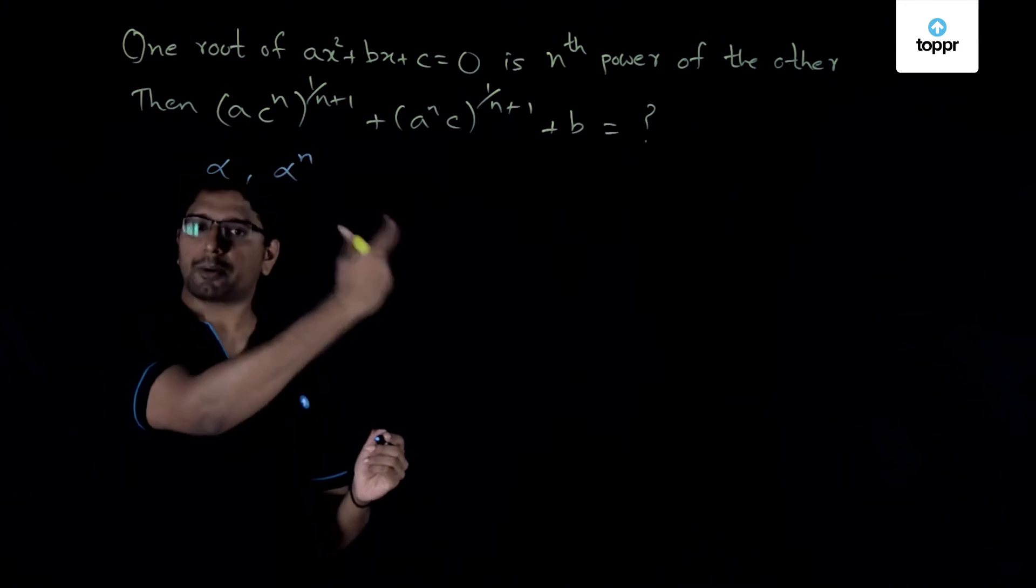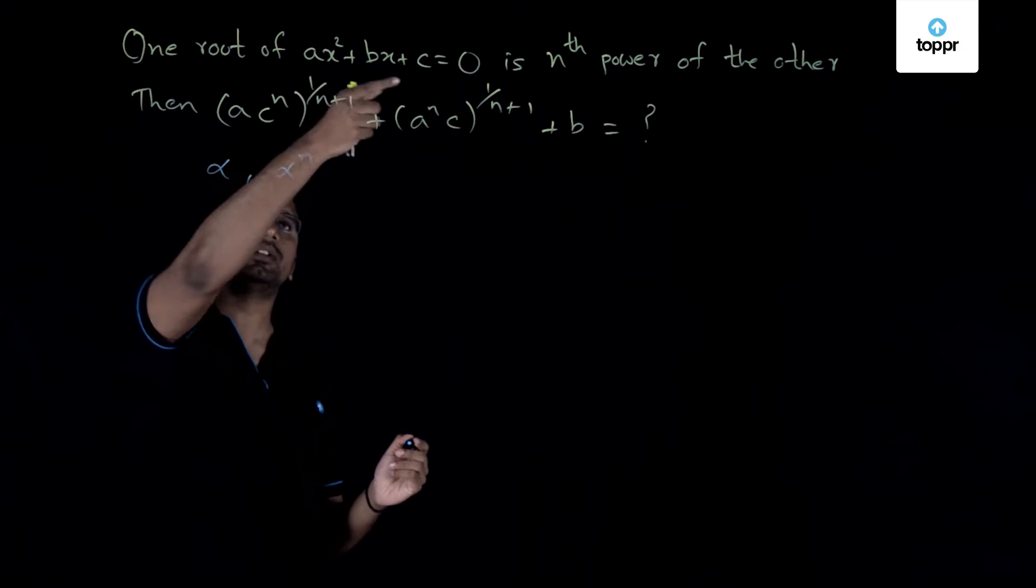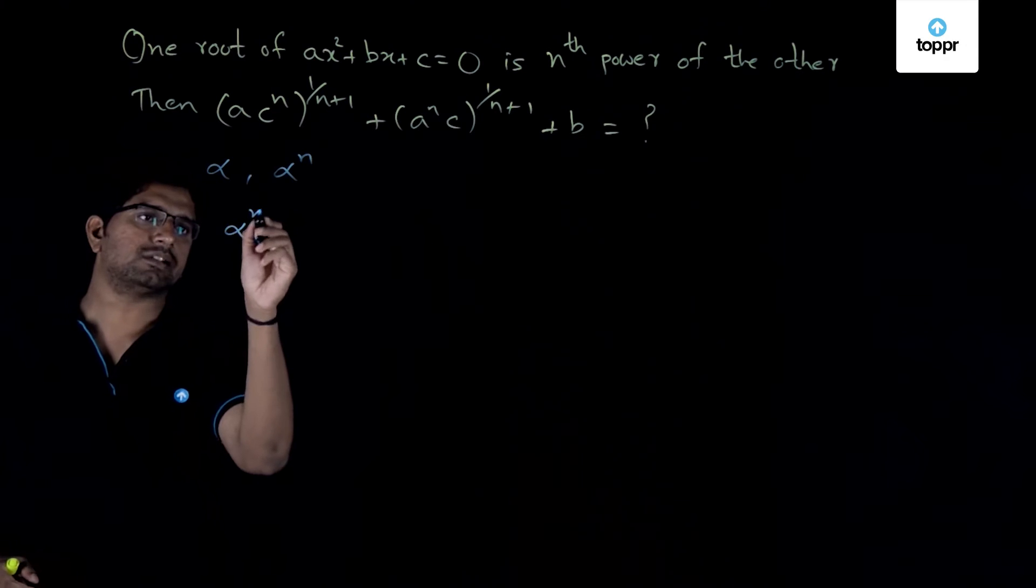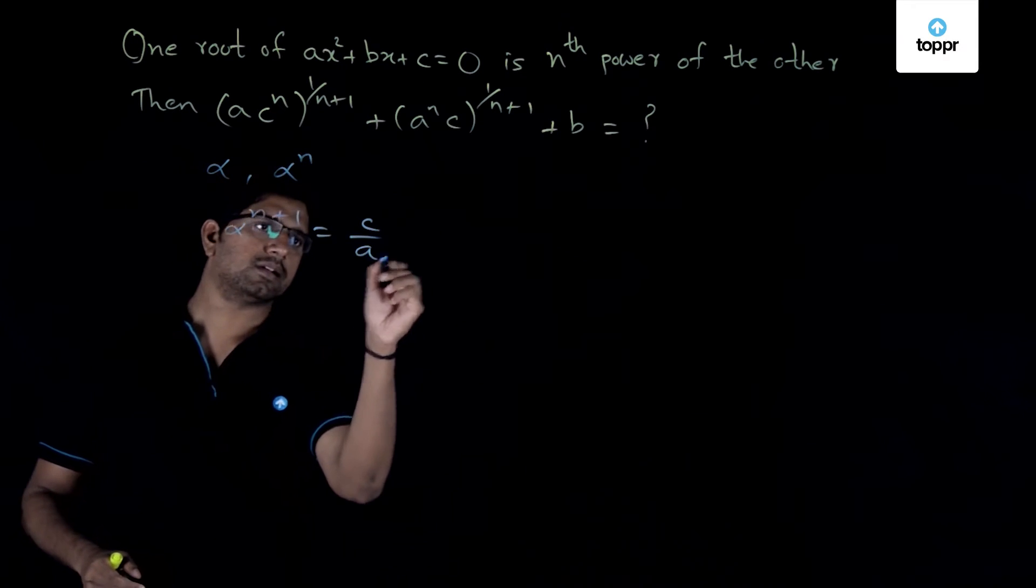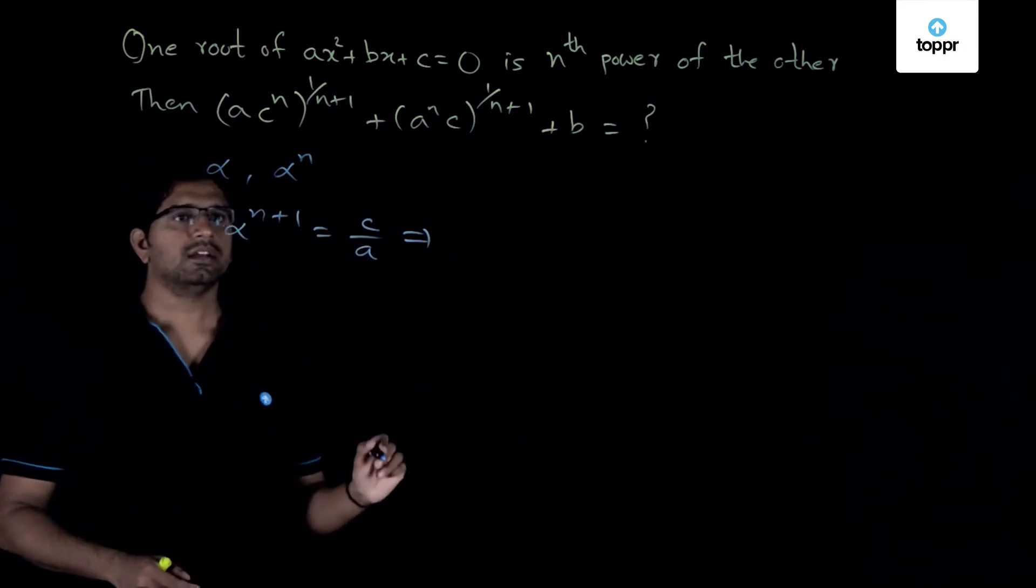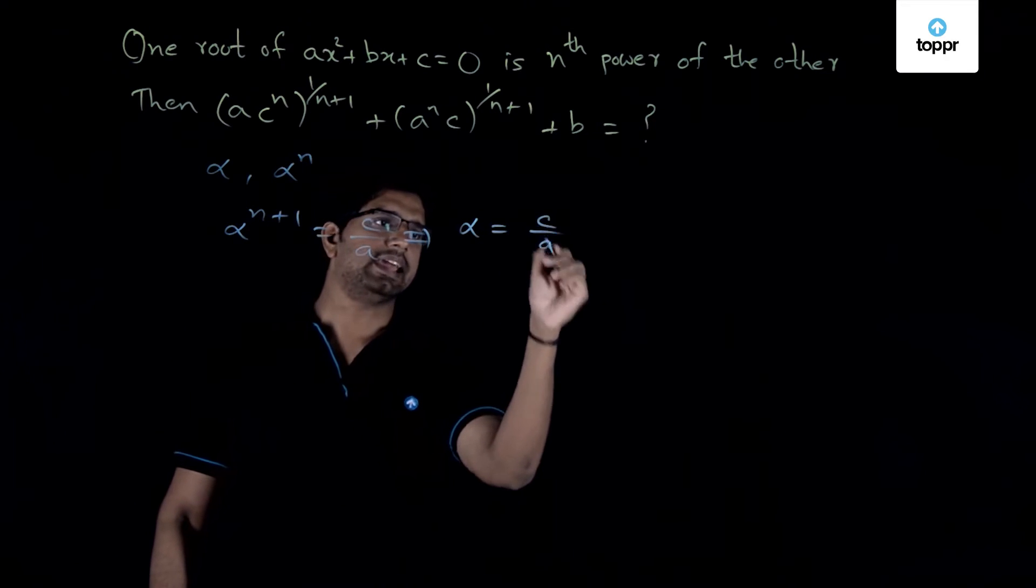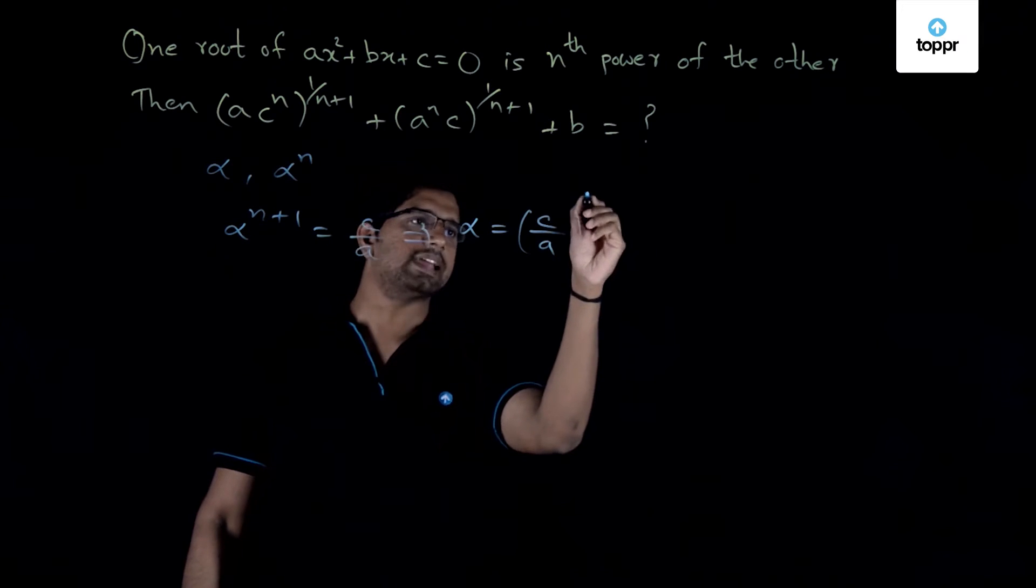Now let me write down the product equation. So the product of the roots of the equation is equal to c by a which translates to alpha power n plus 1 is equal to c by a. So I can actually write alpha is equal to c by a times 1 by n plus 1.